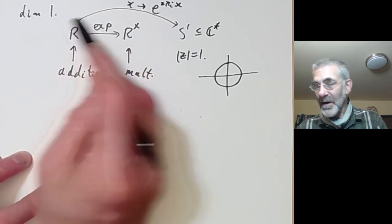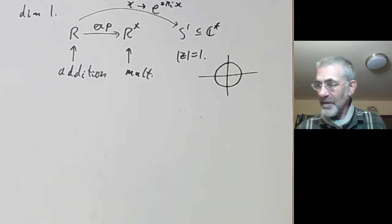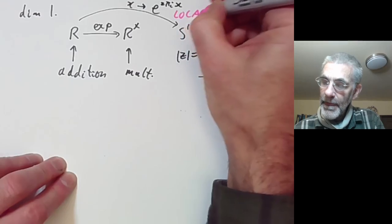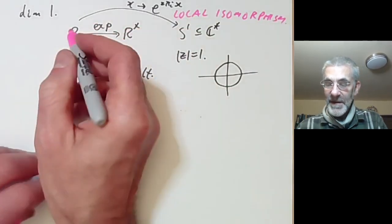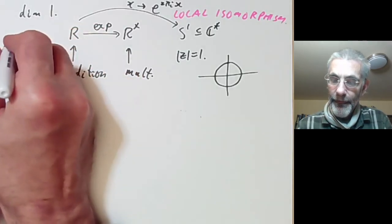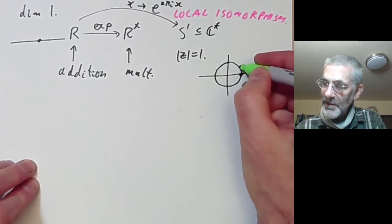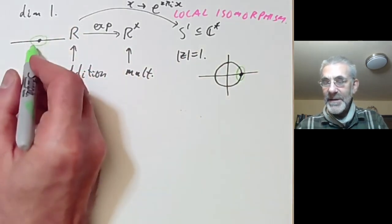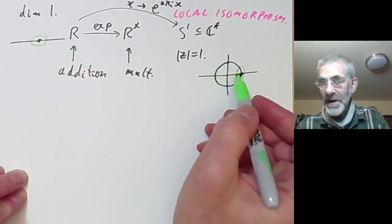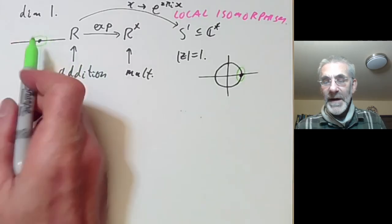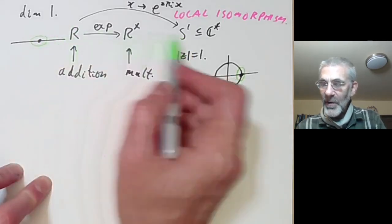The reals are obviously not isomorphic to S¹, but this is an example of a local isomorphism. If you take the reals under addition and the circle group under multiplication, you can take a little neighborhood of the identity in both of them, and the map is an isomorphism from that little chunk to that little chunk in that it preserves multiplication wherever defined. So if you live at the identity and can't see very far, you would think these two groups are really the same.